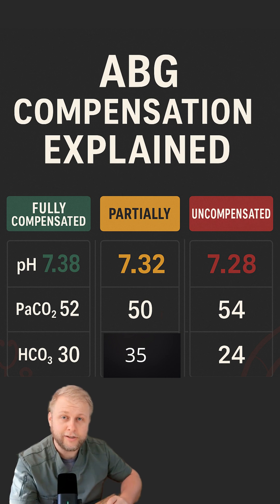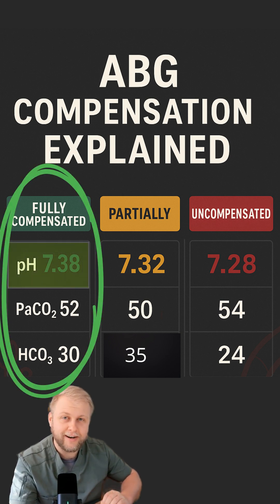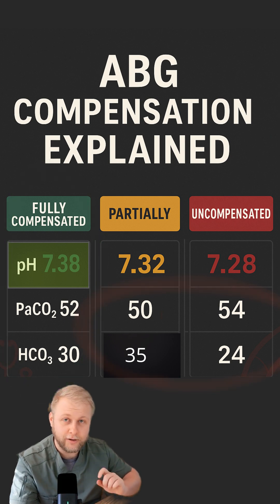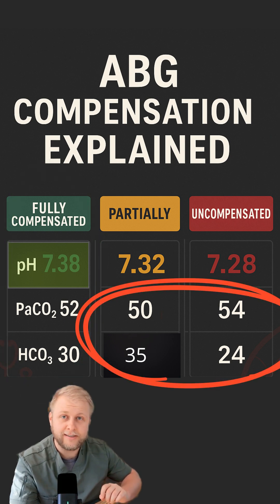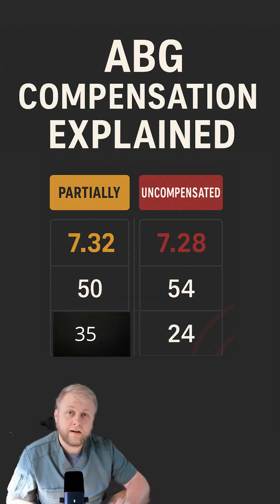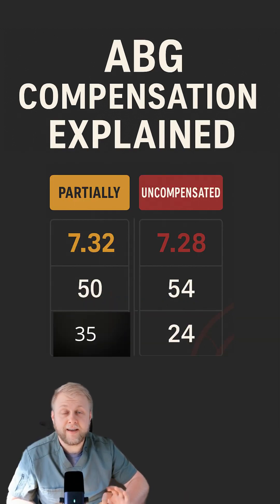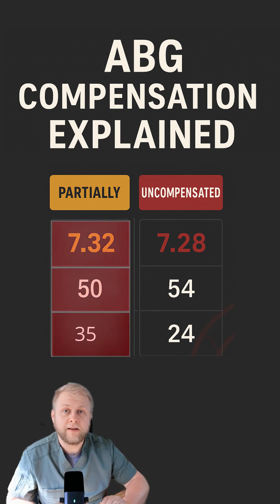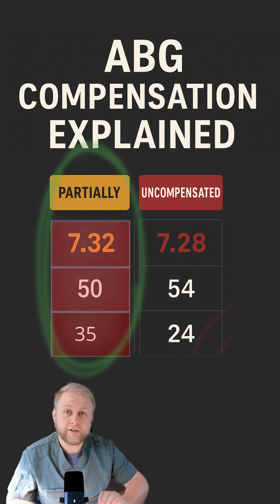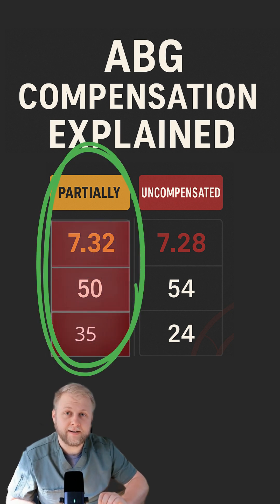Let's start with the pH. If it's normal, it is a fully compensated ABG. If it's not normal, that's when we move on to your carbon dioxide and your bicarb. We're not getting into mixed gas today. So for simplicity's sake, if all three of your numbers are abnormal, then it is a partially compensated ABG.